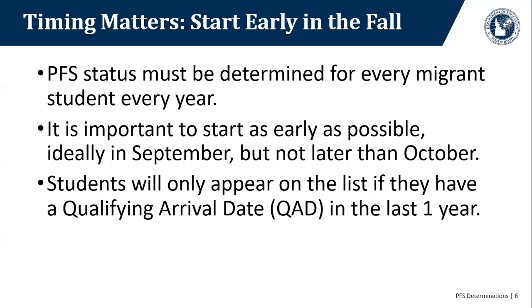It is important to start as early as possible, ideally in September, but not later than October for returning students. The reason for this is that students will only appear on the list if they have a qualifying arrival date in the last year. So if a student moved in the previous October and you didn't run your list until December, that student would not show as having had a QAD in the last year and therefore would not be considered for priority for services.